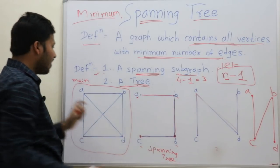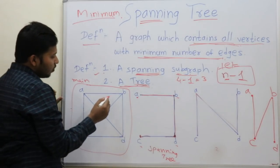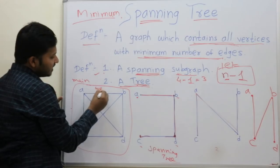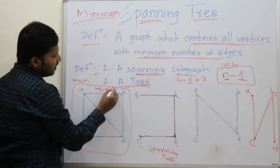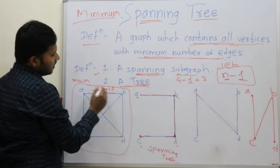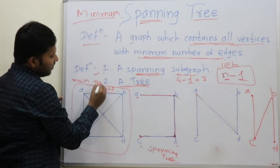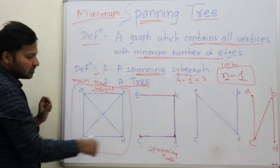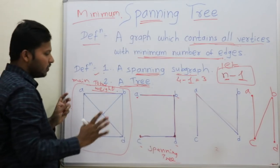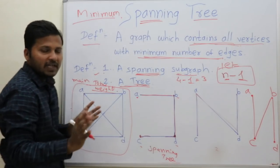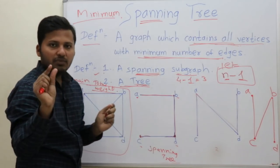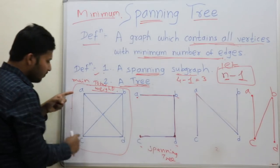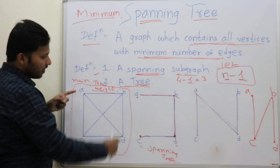So the total weight of all the edges should be minimum. For that there must be a cost or weight over every edge.